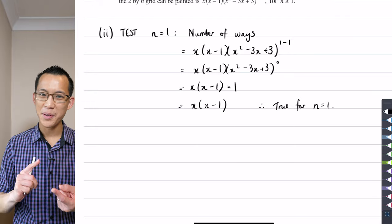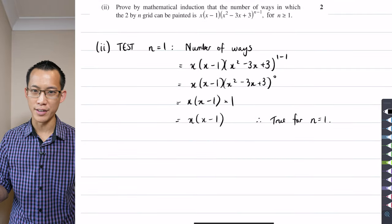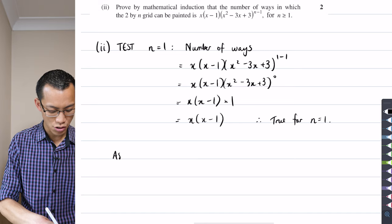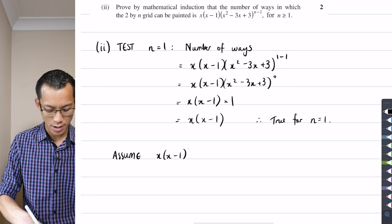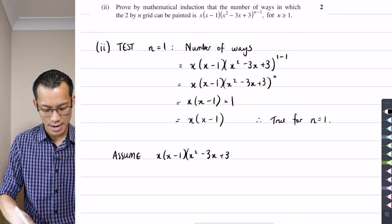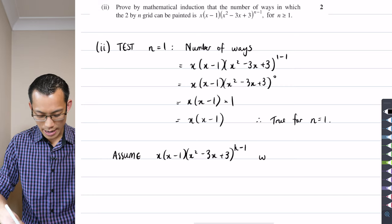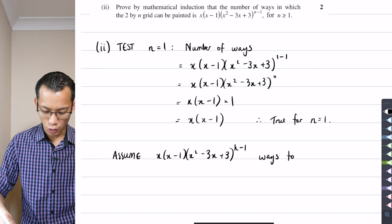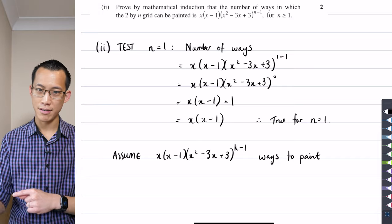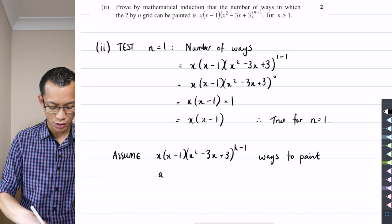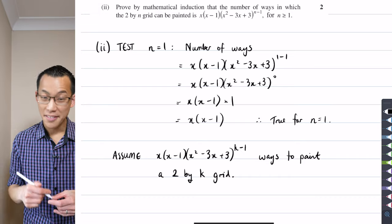Okay what are we then going to assume? Well we're going to assume that the statement is true for that arbitrary choice of n and we're going to assign that the letter k as is customary. So let's assume that there are x(x-1)(x² - 3x + 3)^(k-1) ways to color or to paint and what is the size of this grid we're substituting in k for n so I'm going to say to paint a 2 by k grid. Full stop. There's my assumption.